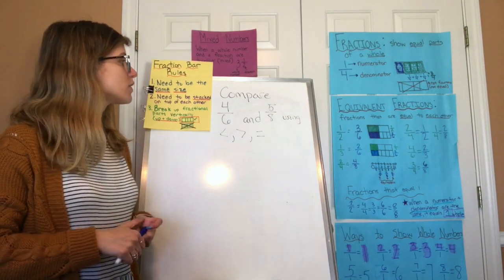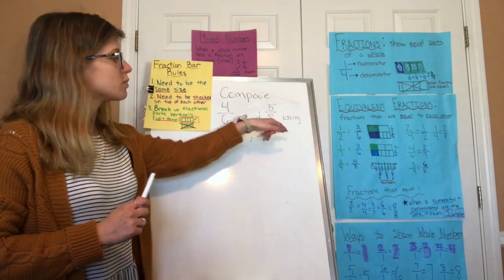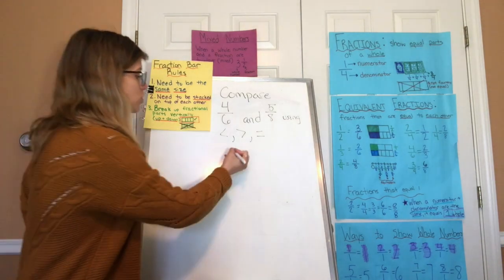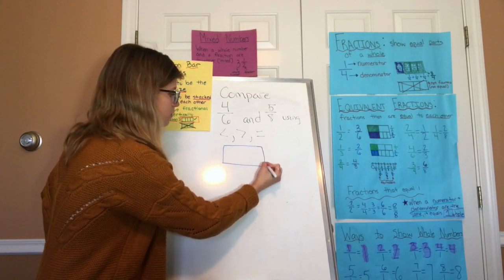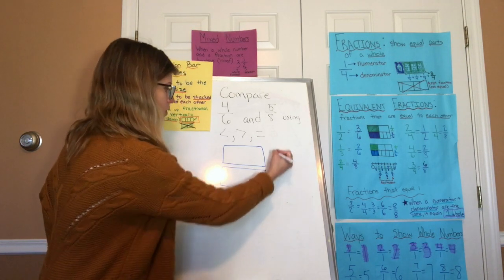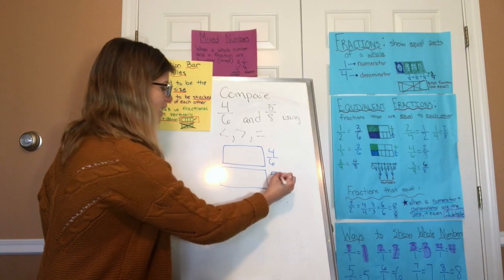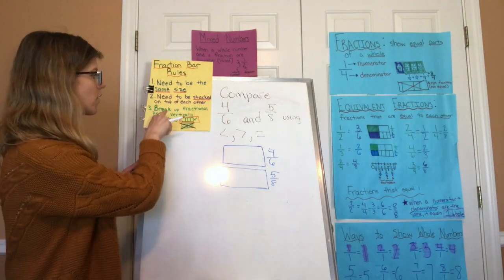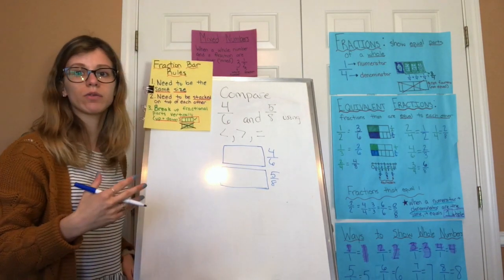I'm going to compare 4/6 and 5/8 using two fraction bars. I'm not just going to assume that because 5/8 has a bigger denominator it's a greater fraction. I'm going to check my work using two fraction bars that are the same size to show 4/6 and 5/8. Notice how I lined them up, stacked them on top of each other, and made sure they're the same size. Now I need to break up the parts going vertically so it's easy to compare.